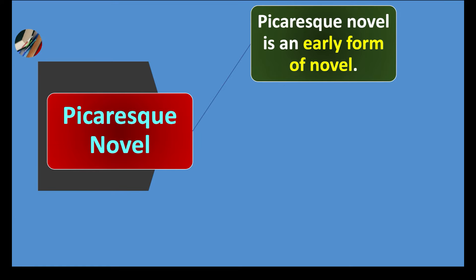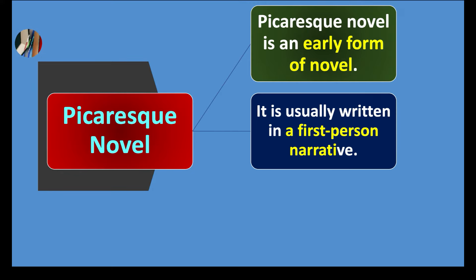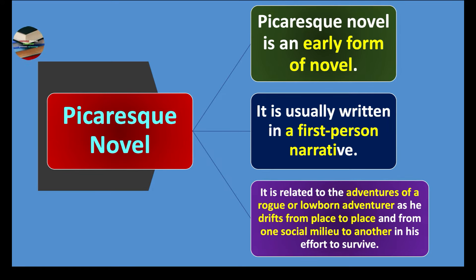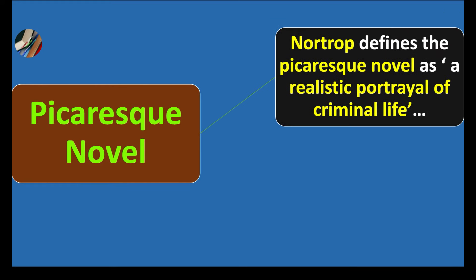Now we have picaresque novel. Picaresque novel is an early form of novel — we trace its origin in the early form of novel writing. It is usually written in a first-person narrative, using 'I' or 'we.' It is related to the adventures of a rogue or low-born adventurer as he drifts from place to place and from one social milieu to another in his effort to survive.